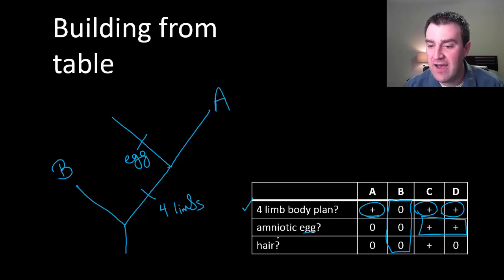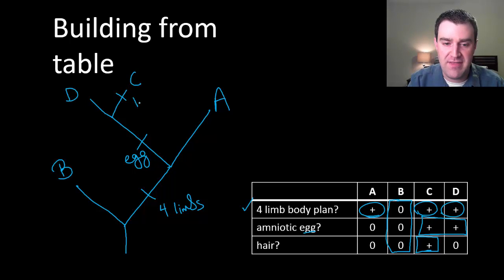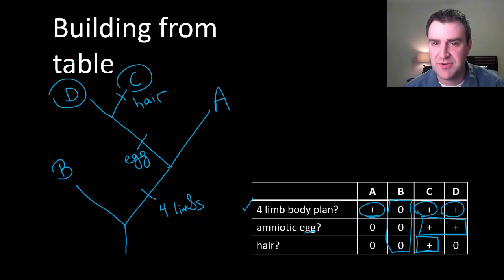And then finally hair. It looks like only C has hair. So let's show a branch again, C and D. And only on the path leading to C, let's show hair. Why does this help us? Because this gives us a sense of who's most closely related. Maybe C and D are the most closely related. And it gives us a sense of the order in which different traits evolved.